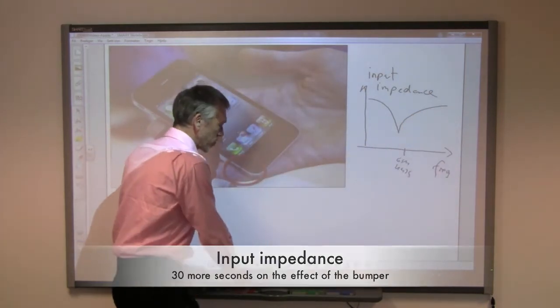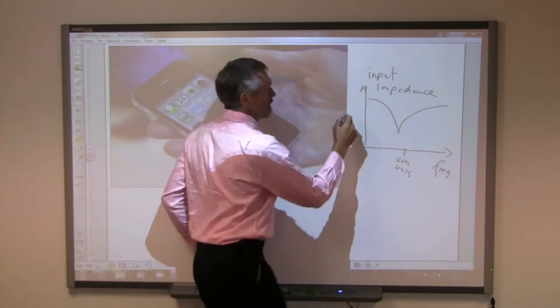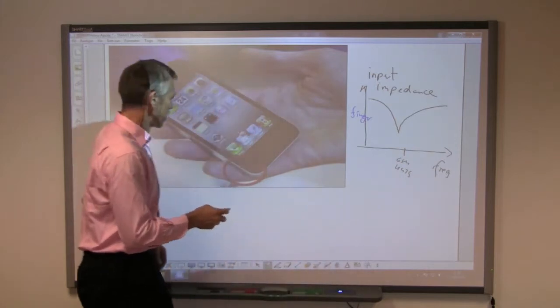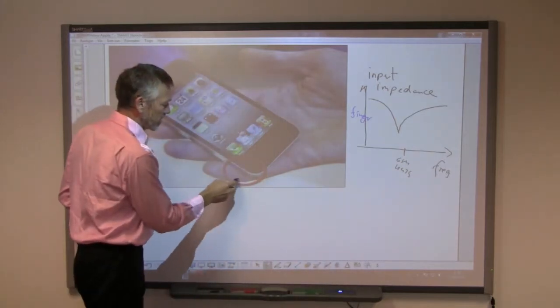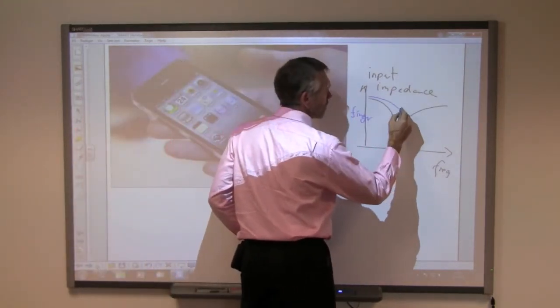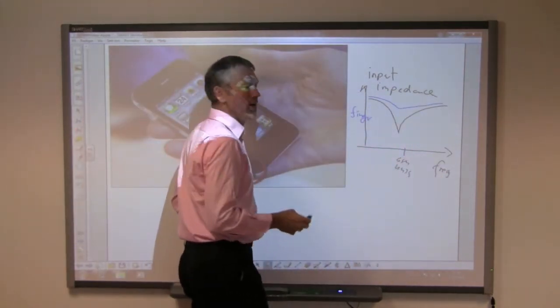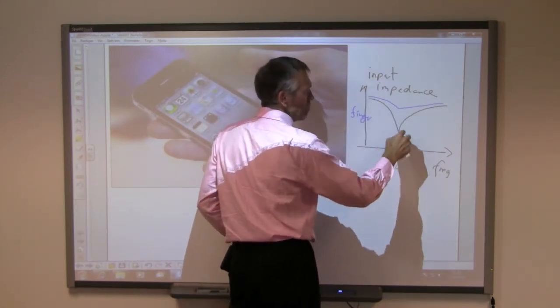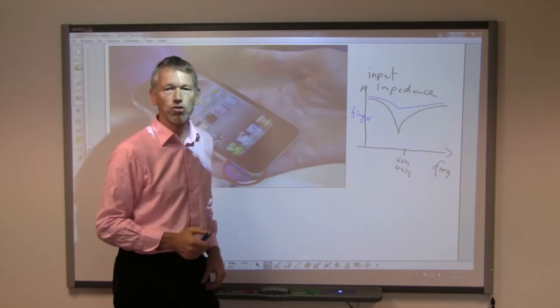And now comes the story where our finger comes in, and if the finger is really placed very close to the antenna, then what we will recognize is that this input impedance will maybe look like that, meaning there isn't really any more fit of the antenna towards it.